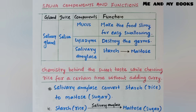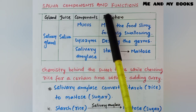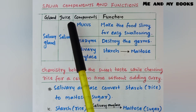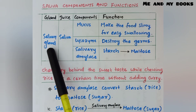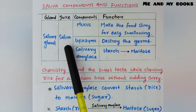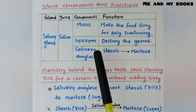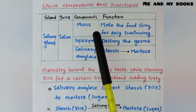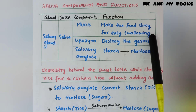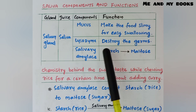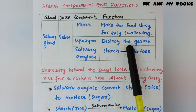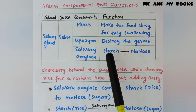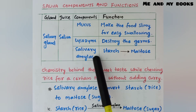Saliva components and functions. You can prepare a table: gland, juice, components, and function. The salivary gland produces saliva. It contains mucus, lysozyme, and salivary amylase — the latter two are enzymes. Mucus makes the food slimy for easy swallowing. Lysozyme destroys germs in our food. Salivary amylase converts starch into maltose.